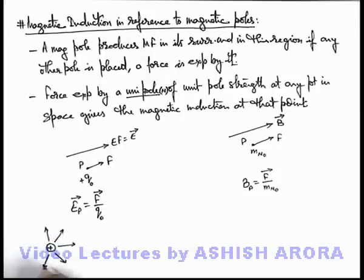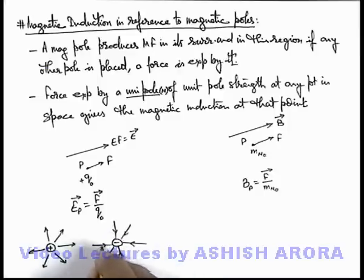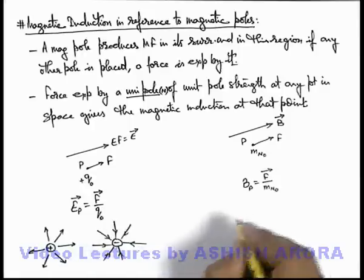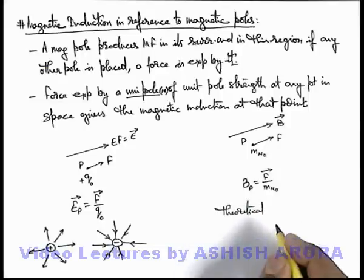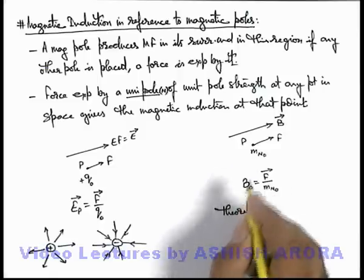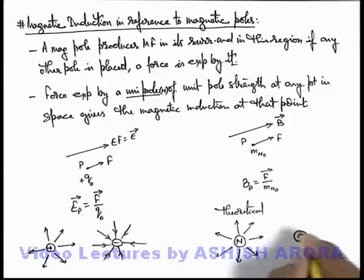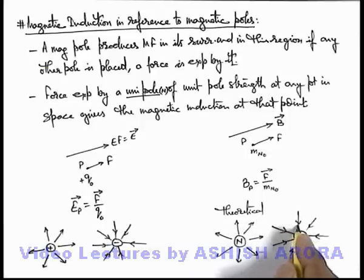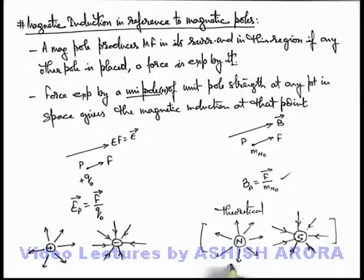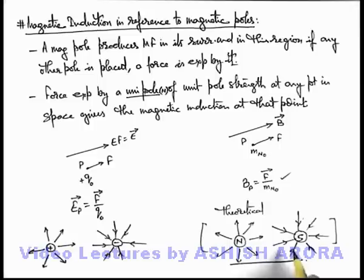Similar to electric field, where a positive charge produces electric lines of force away from it in its surrounding, and a negative charge produces electric field such that electric lines of force are directed into the charge — similarly, a north pole produces magnetic induction in its surrounding directed away from it, just like a positive charge. A south pole produces magnetic field such that field lines are radially directed into it. Practically, magnetic induction is valid but a unipole can never exist in nature, though we already see magnetic lines of force in the surrounding of a bar magnet.